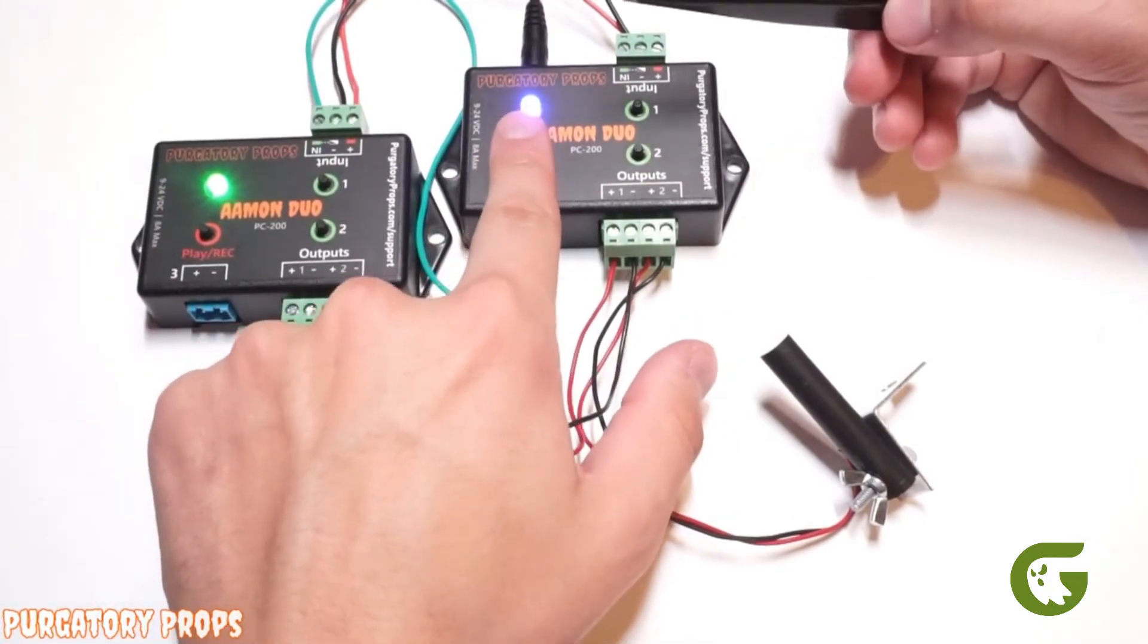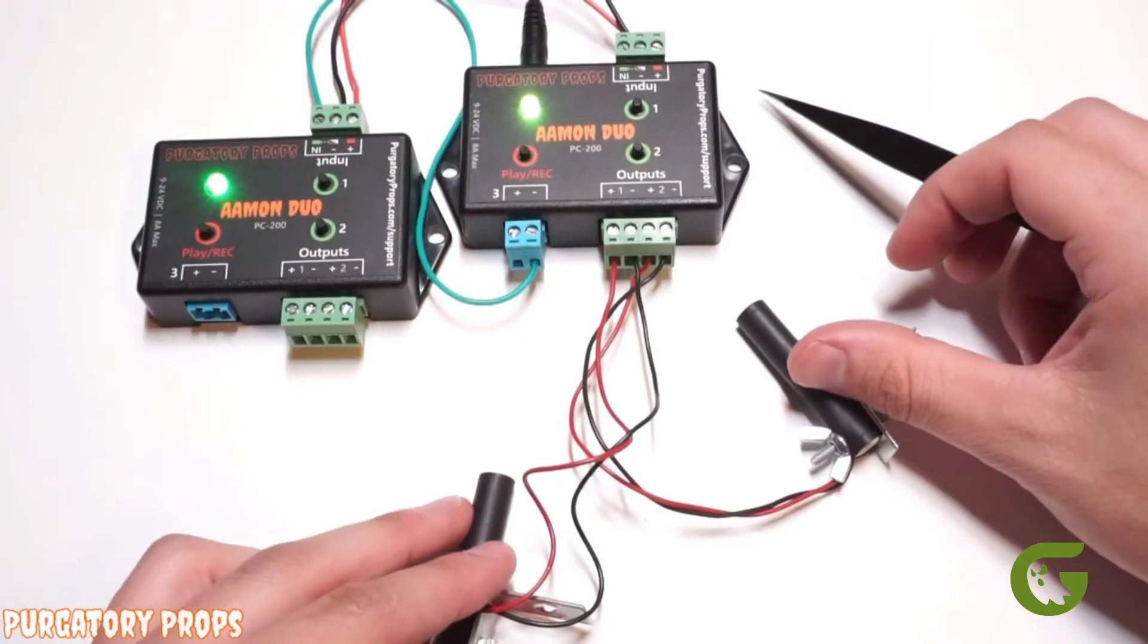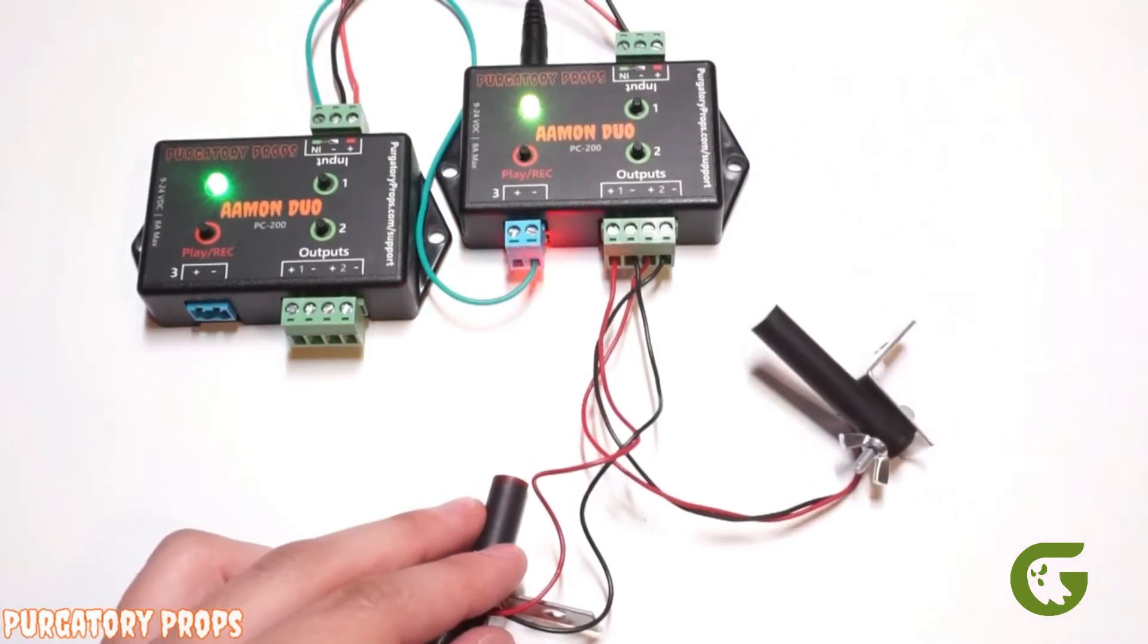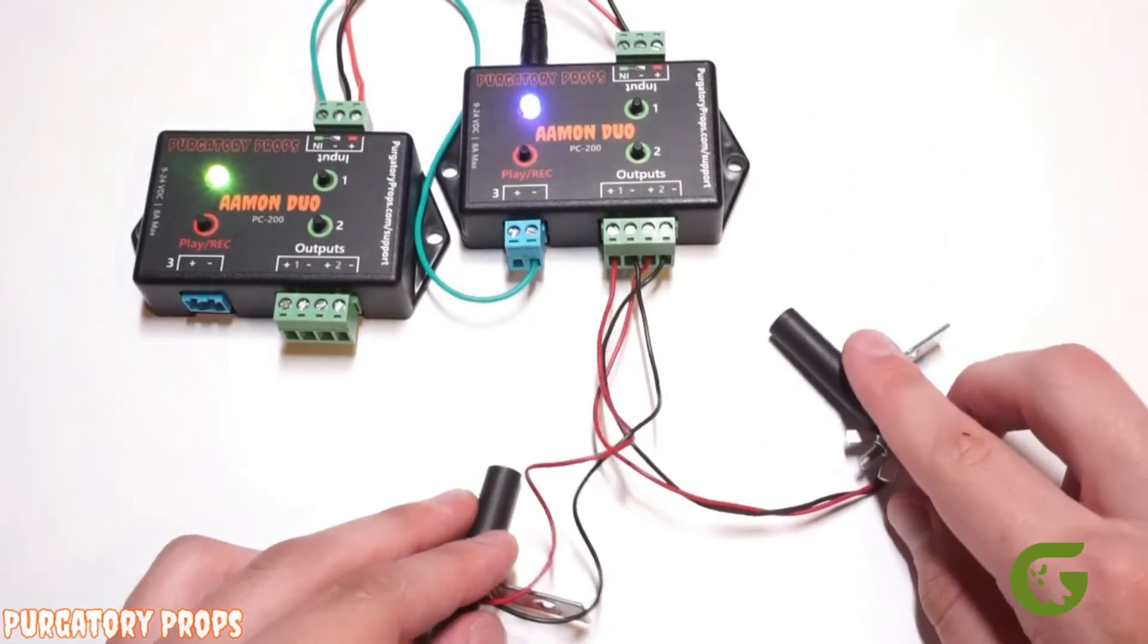So when we play, we'll see this animation go. And then when it is done, this light will turn yellow indicating that controller has been triggered.